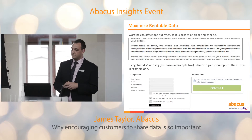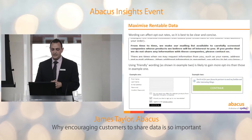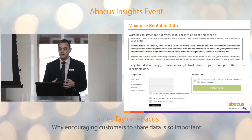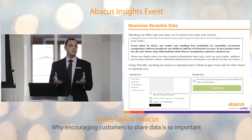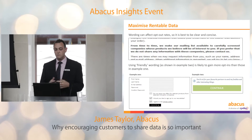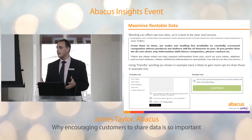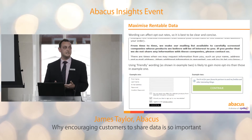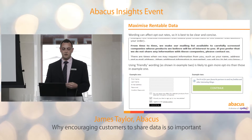It's all about the wording of statements and how they affect opt-out rates. For example: 'From time to time we make our mailing list available to carefully screened companies whose products we believe may be of interest to you. If you prefer that we do not share any information with these companies, please contact us.' That's clear, concise wording — stating the intention and giving them the option to opt out. Another example: 'Do not send me offers for relevant products from selected third party companies.' Pretty straightforward and to the point.